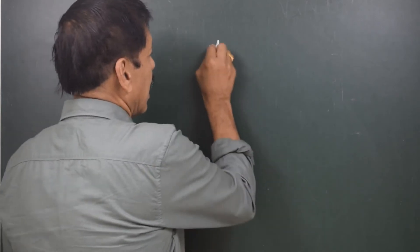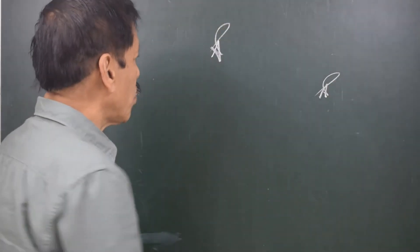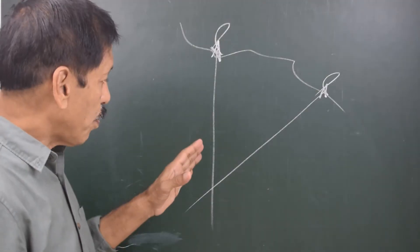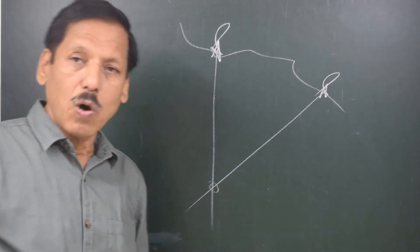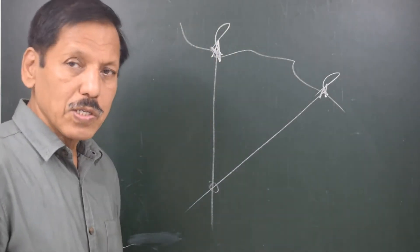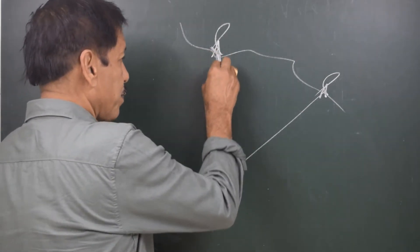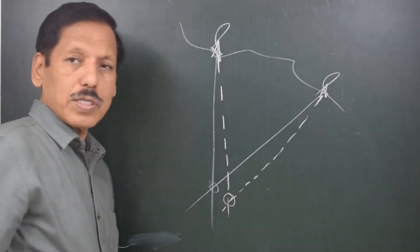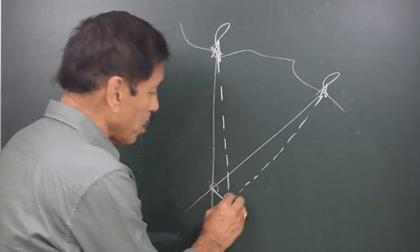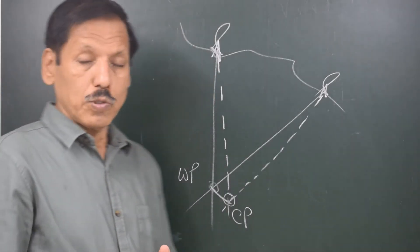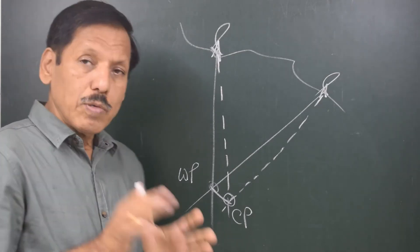We have taken a bearing of two lighthouses on land. These bearings, with error, give a wrong position. The correct position may be on one side or the other. We are talking about a similar error in the two bearings — the bearing error might be clockwise or anti-clockwise. So the correct bearing may be displaced by some degrees, giving a correct position that is shifted from the wrong position.